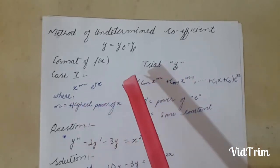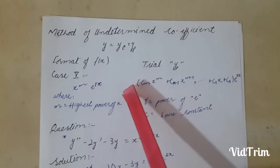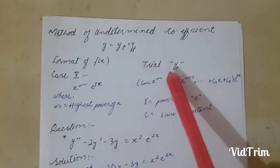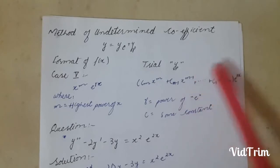For these terms we will take our yp equals cm x^m plus cm minus 1 x^(m-1) up to c0 times e^(lambda x).